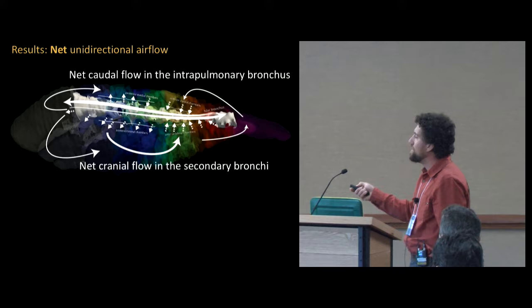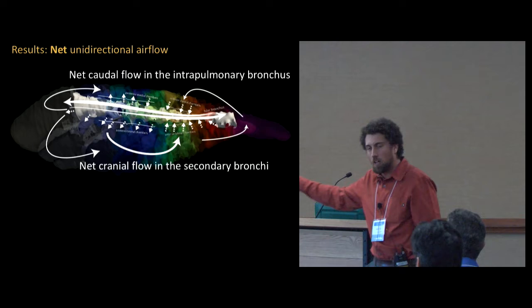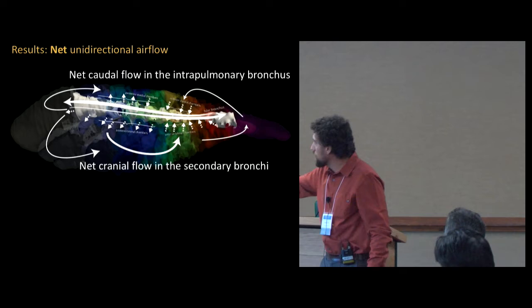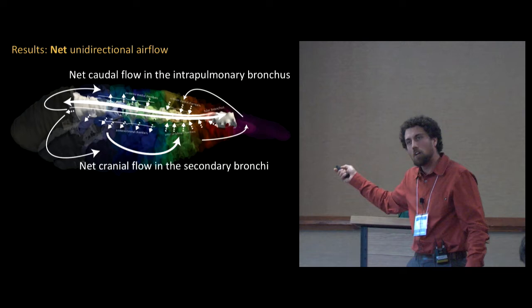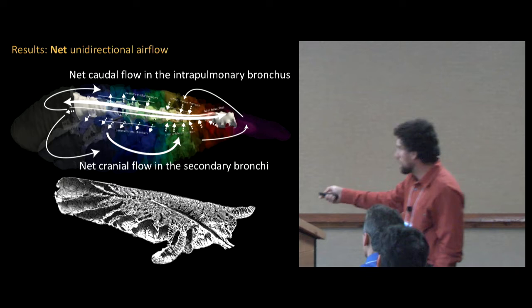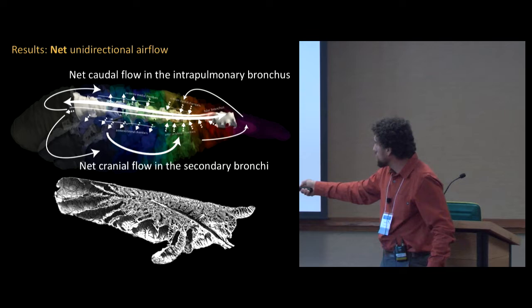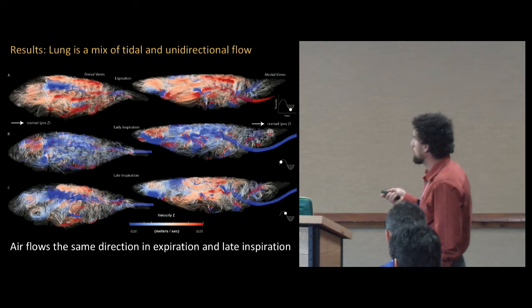To the results. We have an interesting net unidirectional airflow pattern. In that intrapulmonary bronchus, that tube that runs the whole length of the lung, that thing primarily brings air caudally towards the back of the lung. Less air comes back through that tube than air goes forward. On the side chambers, more air comes forward than goes back, which is pretty interesting.